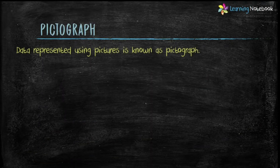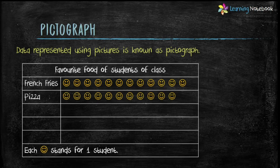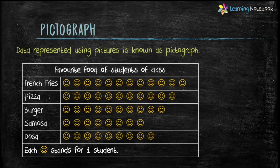Data represented using pictures is known as a pictograph. Let's take an example. This is a pictograph showing the favorite food of students of a class using pictures. Here in this pictograph, a smiley is used as a picture, and each smiley stands for one student.